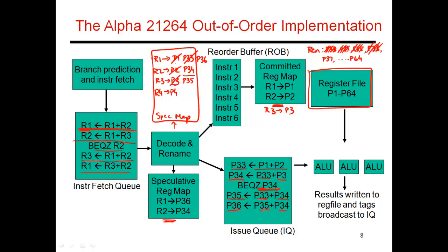Now much later, when the first instruction gets issued from the issue queue, it completes and produces a result in P33, and tells the reorder buffer that it has finished. At this point, the reorder buffer is going to look at instruction number one and make it permanent. It had previously stored a result in P33, so now P33 becomes the permanent value of R1.